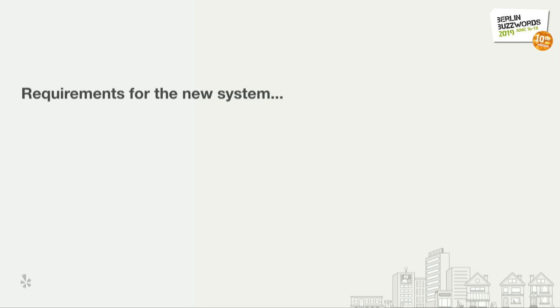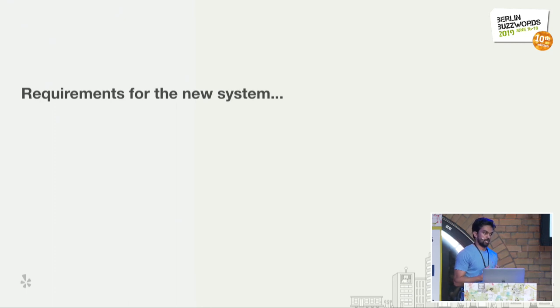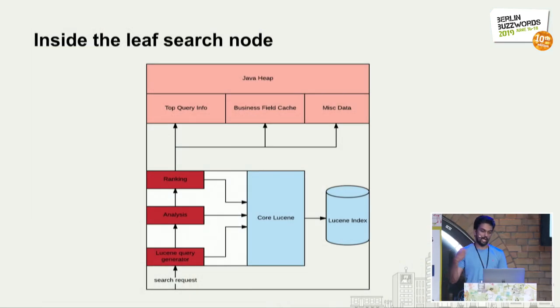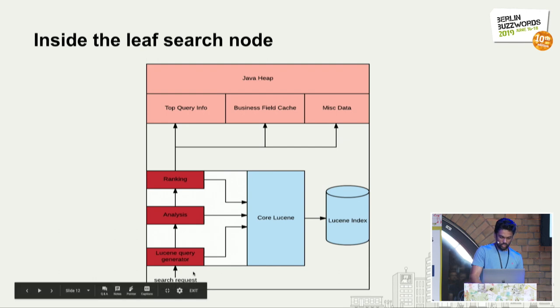Now that we were convinced we needed a newer system, what are the requirements? The mandate handed down from management was that since this is mostly an infrastructure project, we cannot cause regressions in relevance or quality. This meant we had to open our leaf search node, which we had largely treated as a black box, look inside it, and see how we could port these components into Elasticsearch. The ranking part was the key challenge.